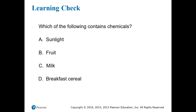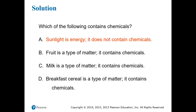This brings us to our first learning check question. These questions are given periodically in the slides throughout the course to test your understanding of the basic concepts that have been covered. This question is: which of the following contains chemicals — sunlight, fruit, milk, or breakfast cereal? If you recall the definition of chemicals, it should be clear that all of these are everyday substances that we can touch or feel or taste, except for sunlight. Sunlight is a form of energy; it does not contain chemicals. In the next chapter, we'll see how energy and matter are distinct from one another.